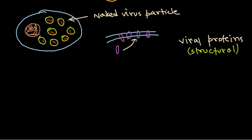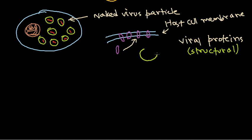These viral proteins that are made are brought onto the surface of the host cell membrane. These are viral proteins, made by the virus. And inside the cell, the naked virus particles are already being generated — the naked viral particle with the DNA or nucleic acid inside.